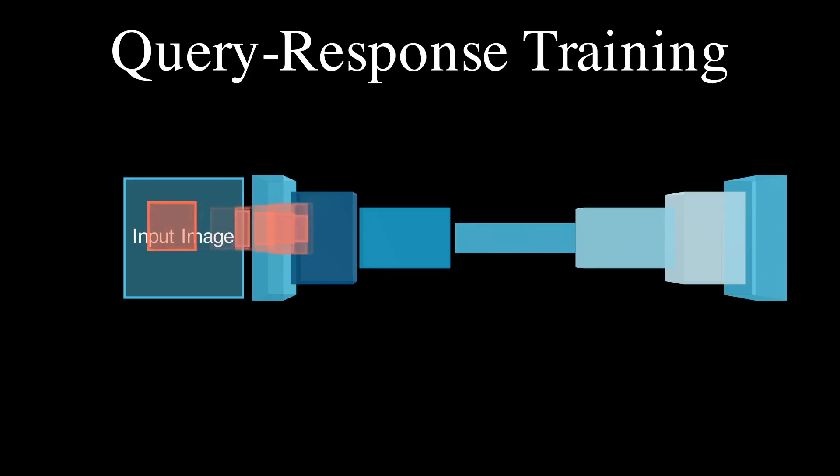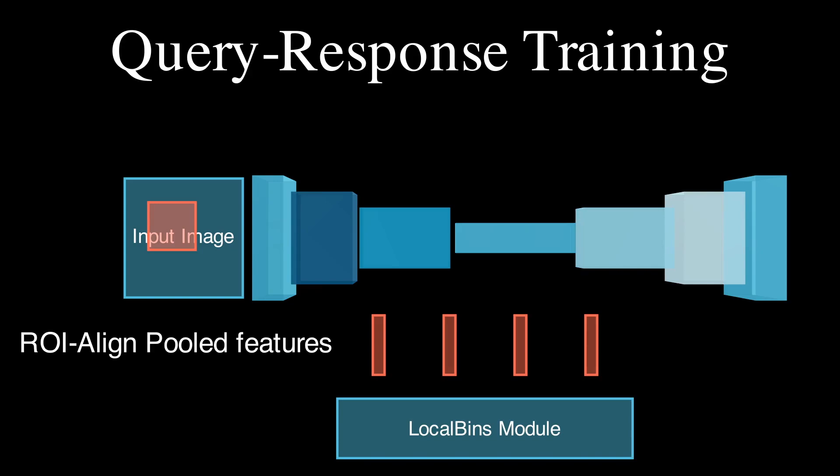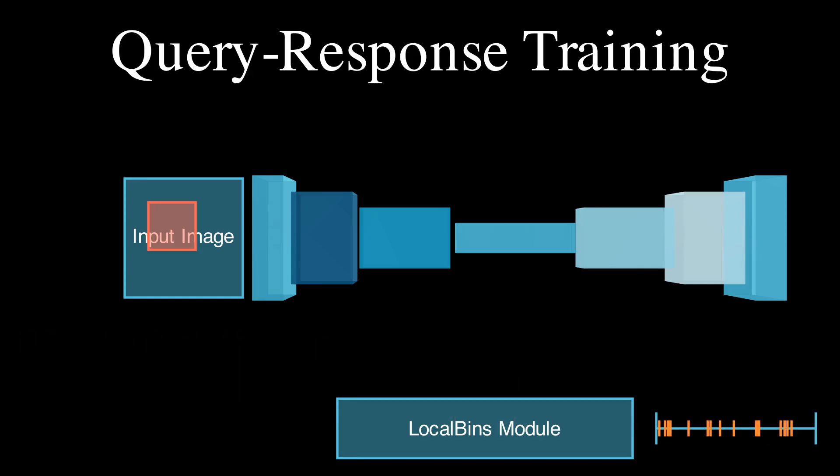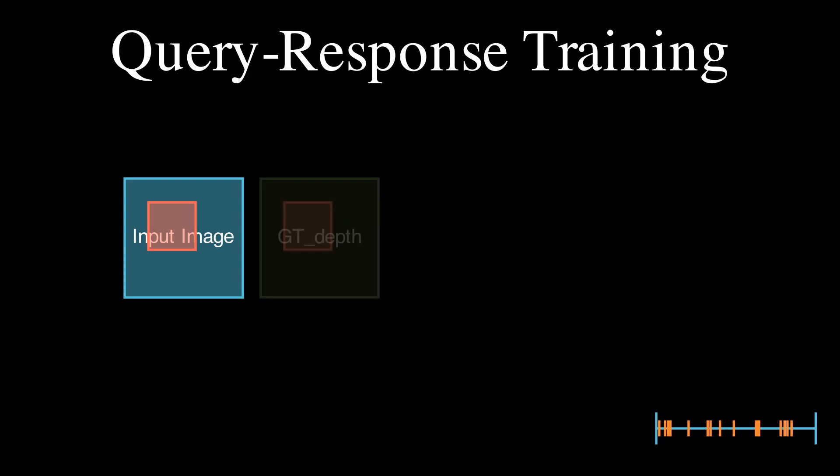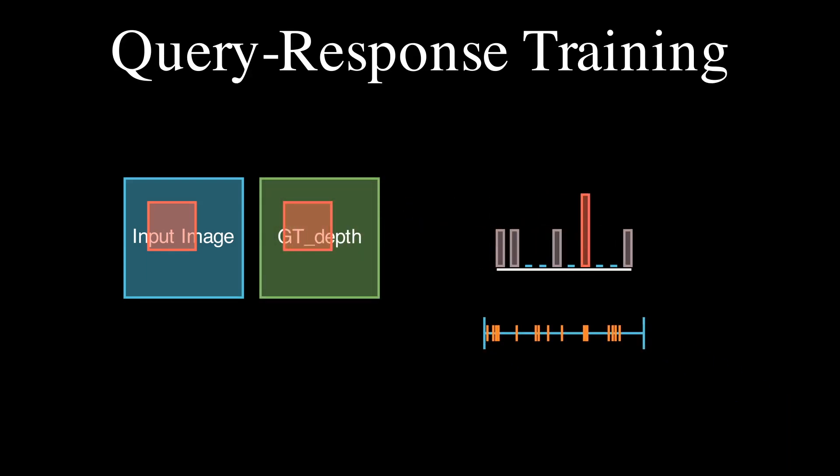We then use ROI-align operation from the object detection framework to project and pool the features from all the decoder layers of the unit. The pooled features are then fed to the local bins module and the resulting bin centers are matched with the distribution of the depth values within that input bounding box.